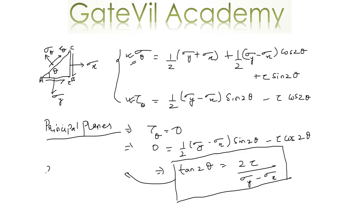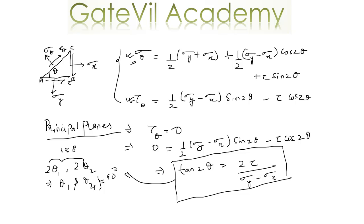This expression tells us the angle at which principal planes exist. This equation will give us two values of 2θ — let them be 2θ₁ and 2θ₂. These angles differ by 180 degrees, so θ₁ and θ₂ will differ by 90 degrees. This outlines a very important fact: principal planes exist at an angle of 90 degrees to each other, meaning they are perpendicular.